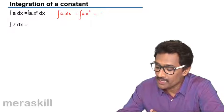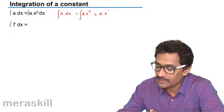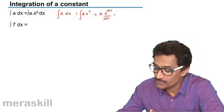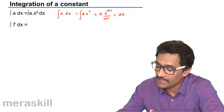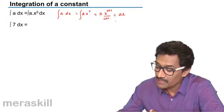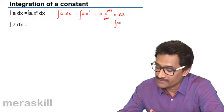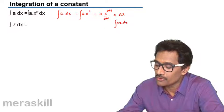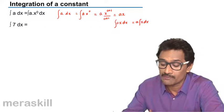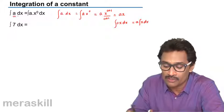So it's going to be a into x raised to 0 plus 1 upon 0 plus 1, which is going to be nothing but ax. But remember, if the integral is already ax, then you're not going to take a again. A will come out and it is x dx. We are talking about integration of a pure constant.